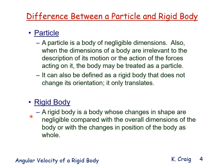A rigid body is a body whose changes in shape are negligible compared with the overall dimensions of the body or with the changes in position of the body as a whole. If you're studying the motion of an airplane flying from New York to Los Angeles and only concerned about the path it follows, the airplane can be treated as a particle. If you're interested in the change in orientation of the airplane, it must be treated as a rigid body. If you're interested in how it deforms — how the wings bend — then the rigid body assumption is no longer valid.